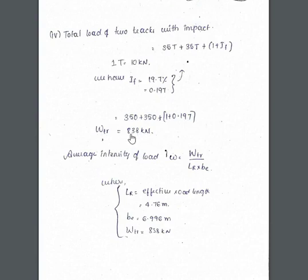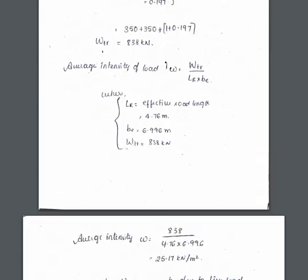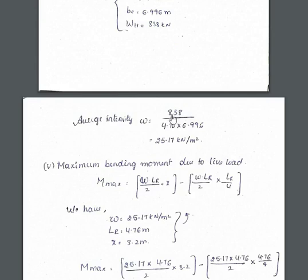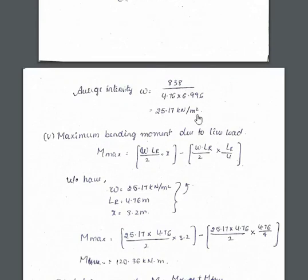Find out the average intensity of the load, that is tracking load by area. That area is effective road length into effective width. LR is effective road length 4.76 meter, B is net effective width 6.996 meter, tracking load is 838 kilonewtons. Now find out the intensity of the load. If you substitute all the values, you got the intensity of load as 25.17 kilonewtons per meter square.